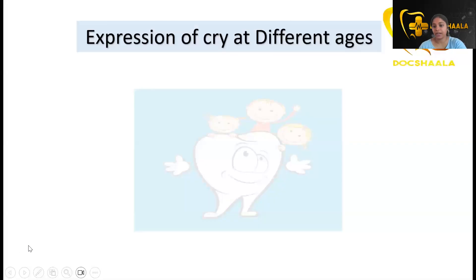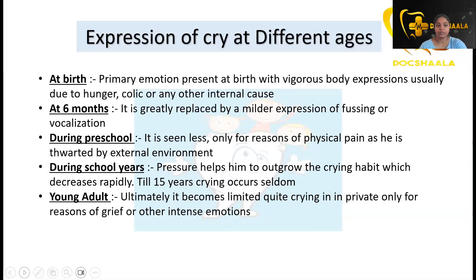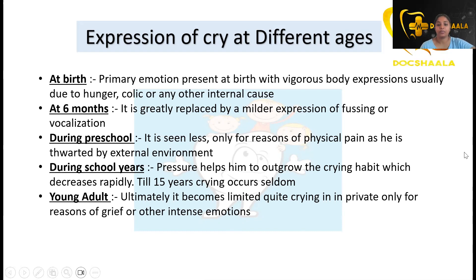The expression of cry at different ages: we express grief, sorrow, and cry differently at different ages. At birth, it is the primary emotion a child experiences — if the child is hungry or having any disturbance, they express it as a cry. By six months, it is greatly replaced by the milder expression of fussing or vocalization.